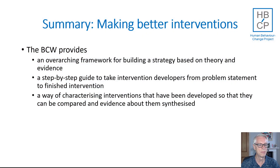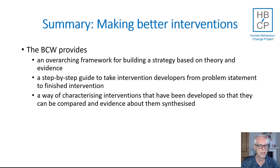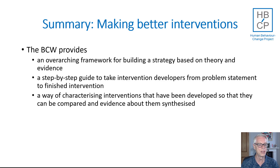In summary, the Behaviour Change Wheel is an overarching framework for building a strategy based on theory and evidence, and it provides the heart of a step-by-step guide taking intervention developers from the very initial concept and problem statement to the completed intervention. It also provides a way of characterising interventions that have already been developed — using the intervention types, policy options, and COM-B model — so that we can compare them, synthesise evidence about their effectiveness, and build better and better models of how to change behaviour.